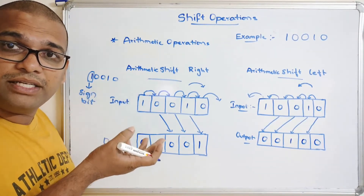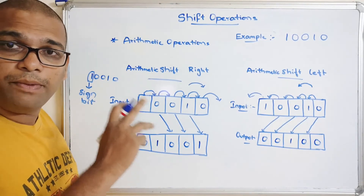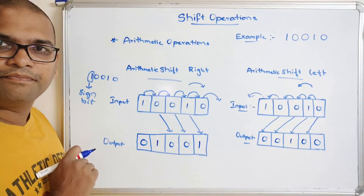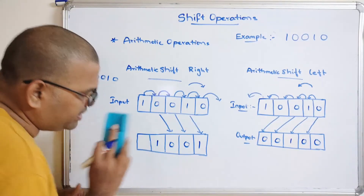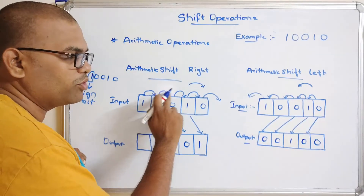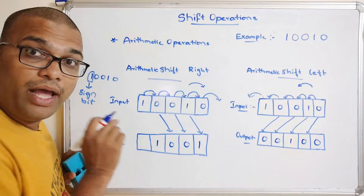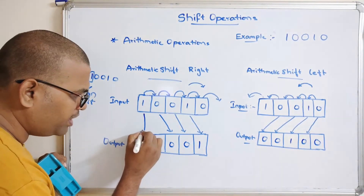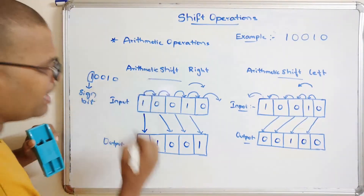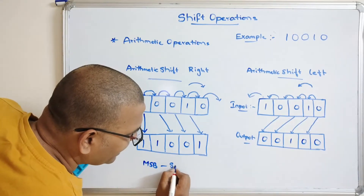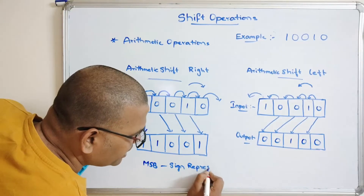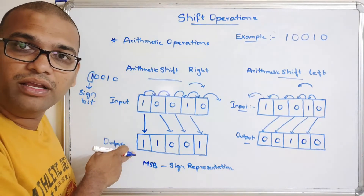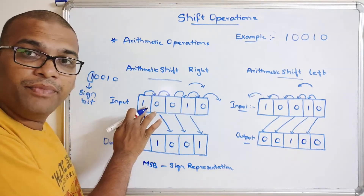In arithmetic shift, the MSB bit is called the sign bit — it represents the sign. Because it is an arithmetic operation, the sign should not be changed after performing the shift. So in arithmetic shift right, the MSB sign bit of the input must be copied to the MSB of the output.